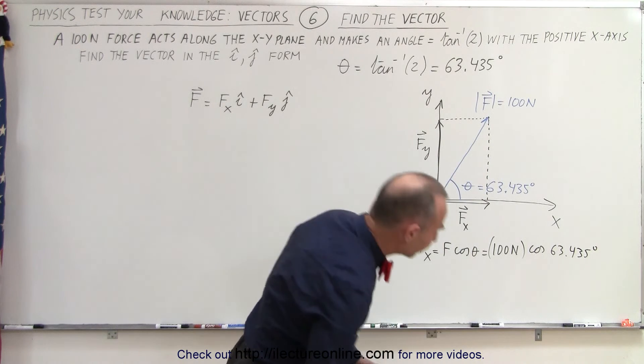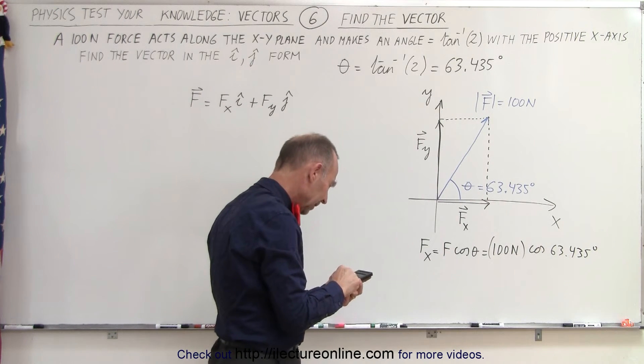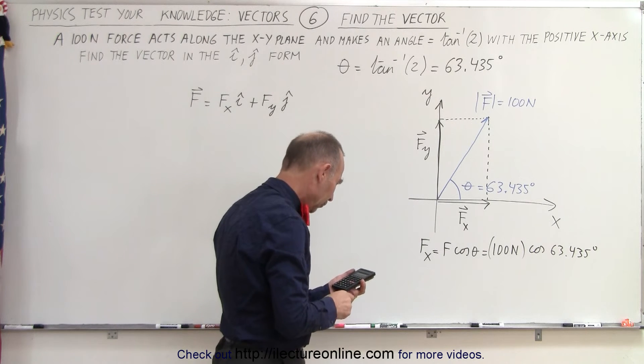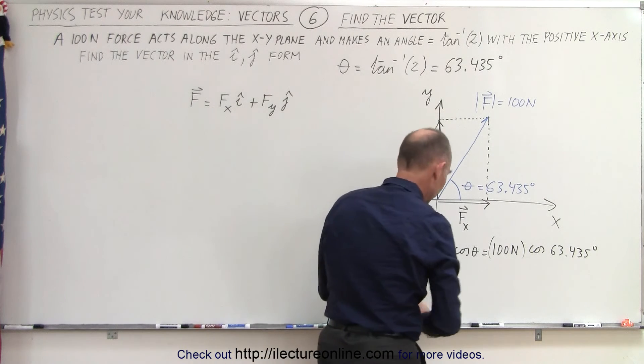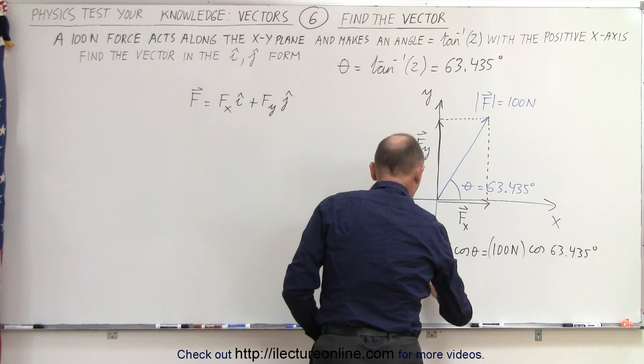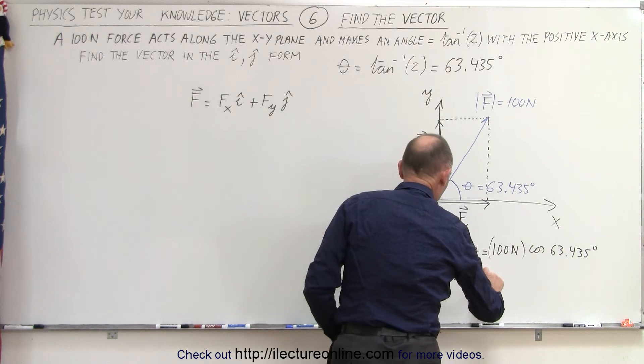And let's see what that's equal to. So, take the cosine of that, and we multiply it times 100, and we get 44.7 Newtons. So F sub X is equal to 44.7 Newtons.